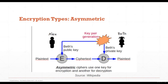In asymmetric encryption, two keys are involved — a private key and a public key. The public key is used to encrypt messages, and the private key is used for decryption.